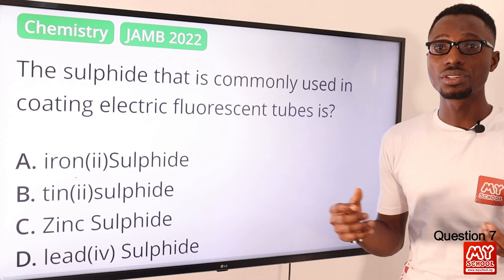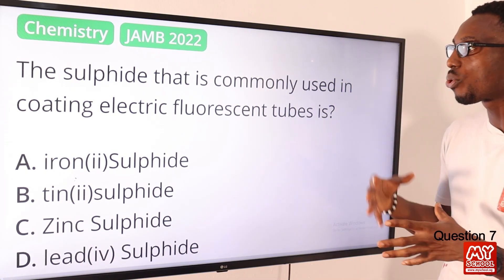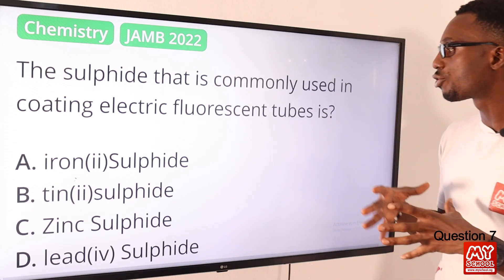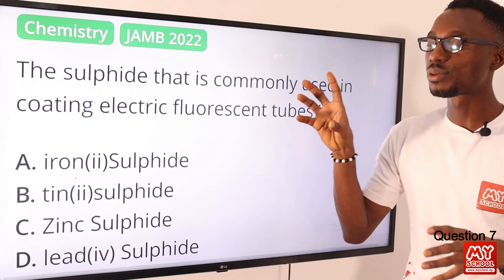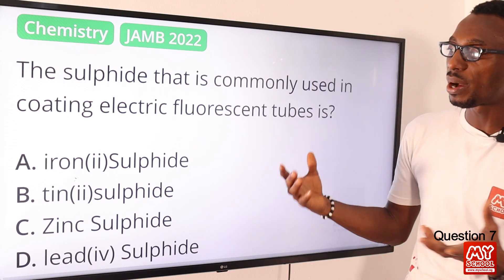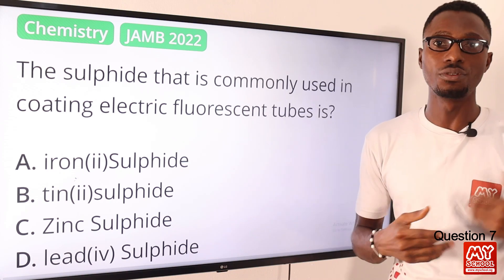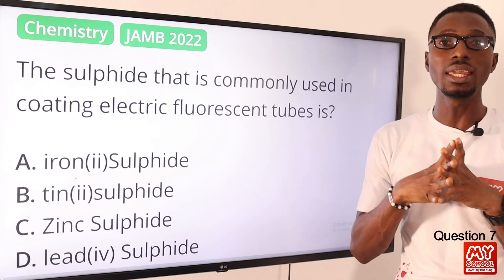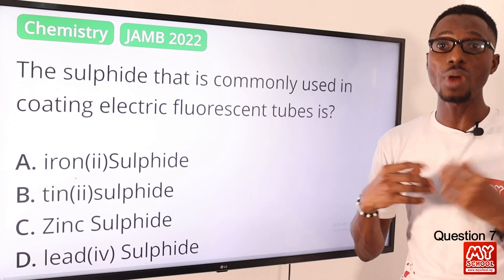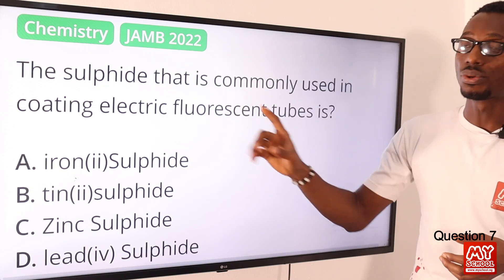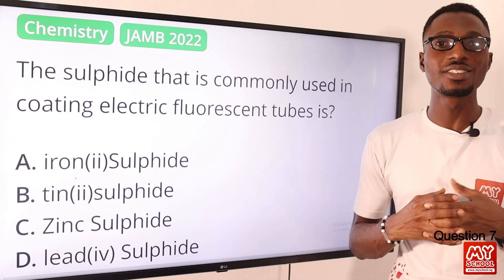Question seven: the sulfide commonly used in coating electric fluorescent tubes is what? That is zinc sulfide. If you study about zinc sulfide, you realize it has many uses, and one key use is this coating property. The correct option is option C for zinc sulfide.